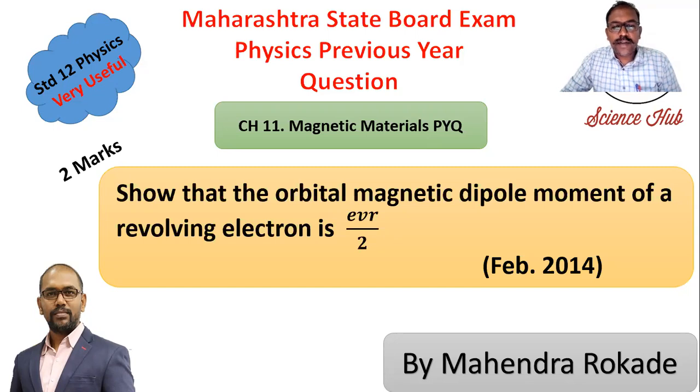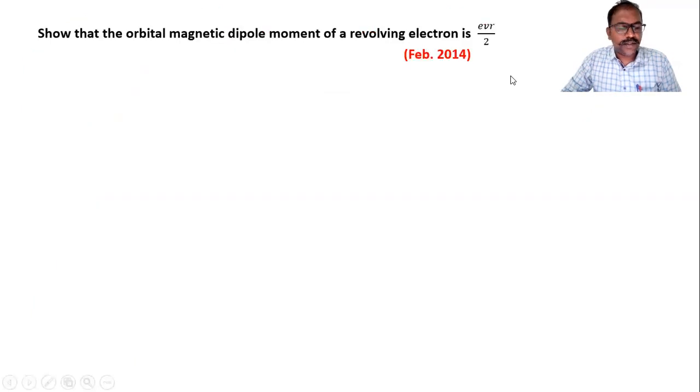And it is show that the orbital magnetic dipole moment of revolving electron is EVR by 2. Now we have to show this. Now let's see the solution of this question.